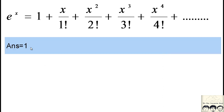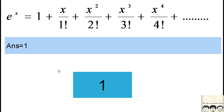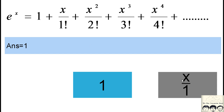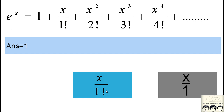First, we start our answer with 1. We need to find the series expansion of this infinite series, so we start out with 1. Then we need to add the next term. We multiply 1 by x divided by 1, which gives x by 1 factorial — which is the same as x by 1.